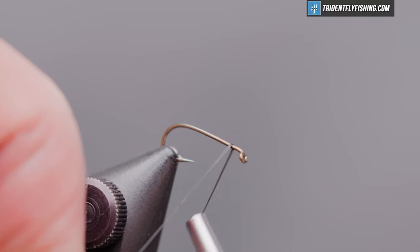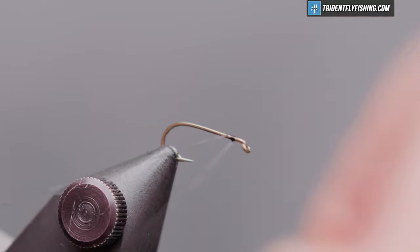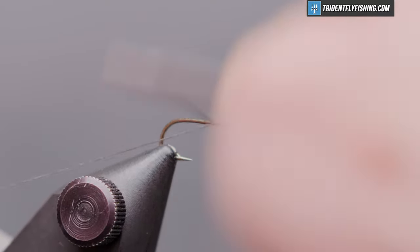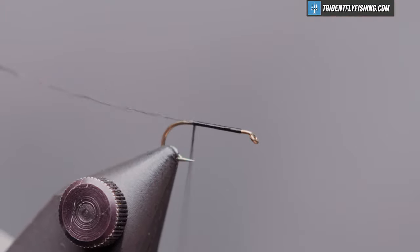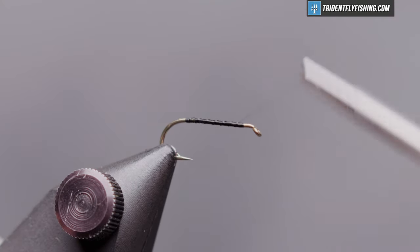We'll start our tie one eye length behind the hook eye and run our thread back to the bend of the hook, or the start of the bend of the hook. Then back up to our initial tie-in point.